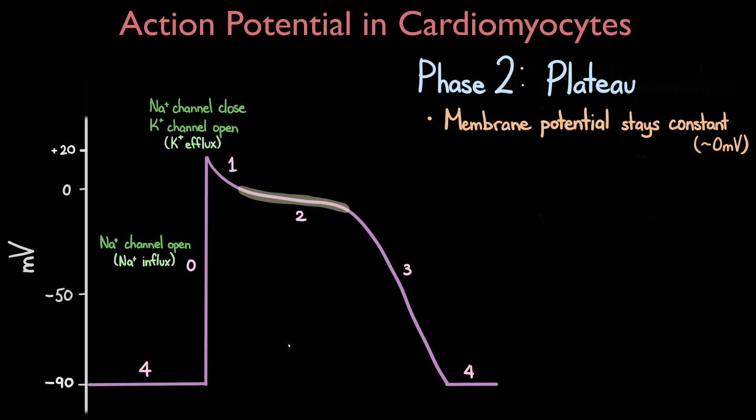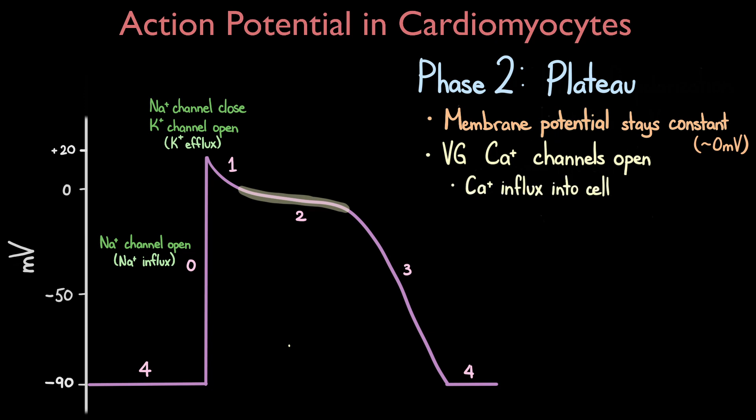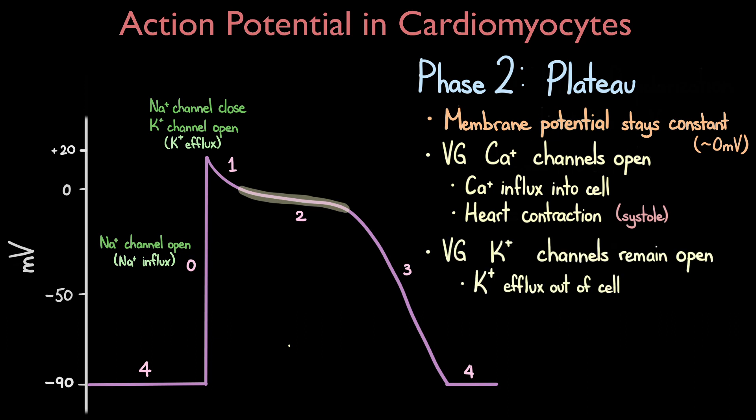Phase two of the cycle is also known as the plateau phase. During this phase the voltage across the cell membrane stays fairly constant at around zero millivolts. Calcium voltage-gated channels open to allow an influx of calcium ions into the cell. These calcium ions will interact with ion channels on the cardiomyocyte's sarcoplasmic reticulum and are ultimately responsible for the contraction of the heart during systole. At the same time, the potassium channels remain open to allow the efflux of potassium ions. The movement of these positively charged ions in opposite directions creates a transient equilibrium and results in a relatively constant cell membrane potential.